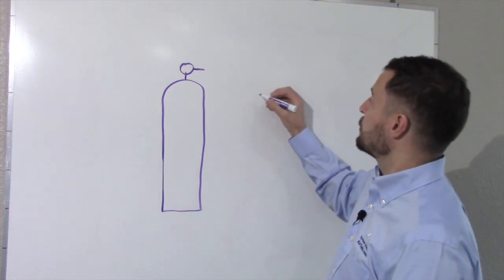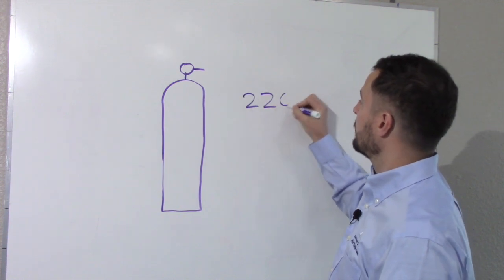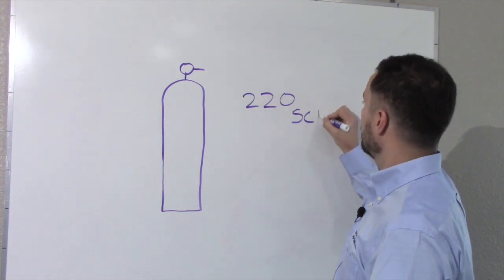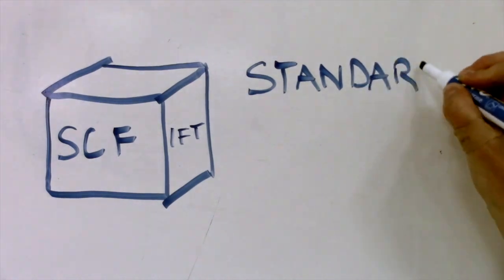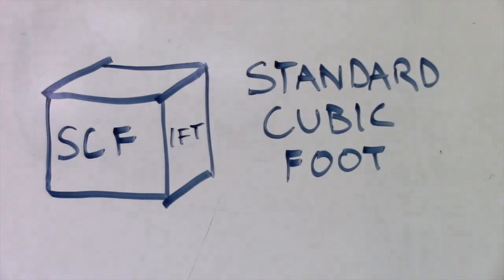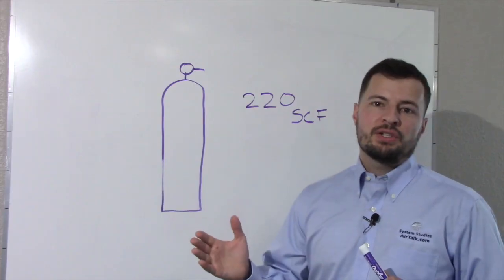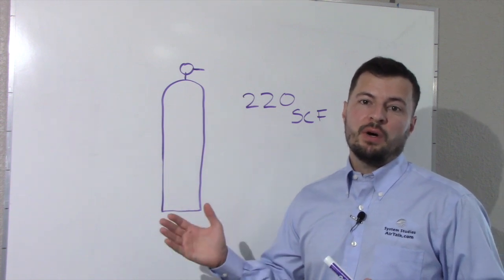Each nitrogen tank holds 220 standard cubic feet of nitrogen. Check out our video titled What is a Standard Cubic Foot for more information. For a basic understanding, let's just think of this as a tank that holds 220 gallons of water.